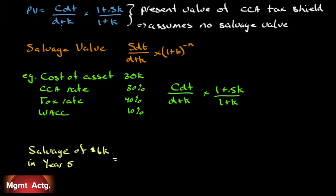This formula uses a geometric series rather than calculating the undepreciated capital cost and tax savings every year. If there's a half-year rule, we adjust by the correction factor; the sum gives us the present value of the tax shield, which has nothing to do with the cash flow timeline — depreciation is a non-cash expense, so we calculate it separately. However, it assumes no salvage value and depreciates the asset to zero. If we sell the asset, then the salvage value term would be SDT over D plus K, discounted back to today.